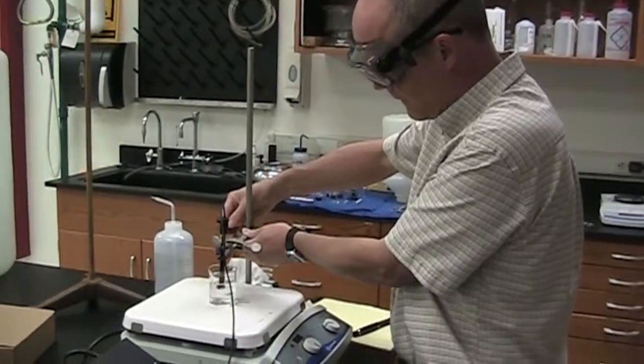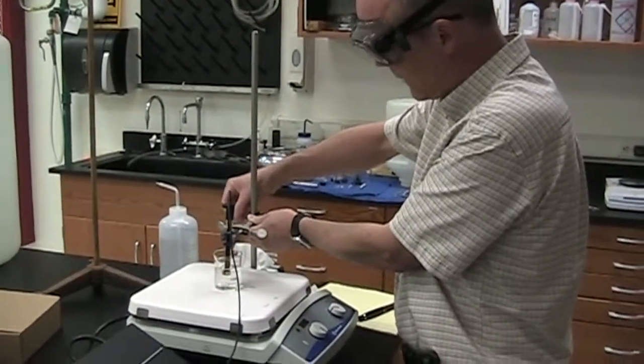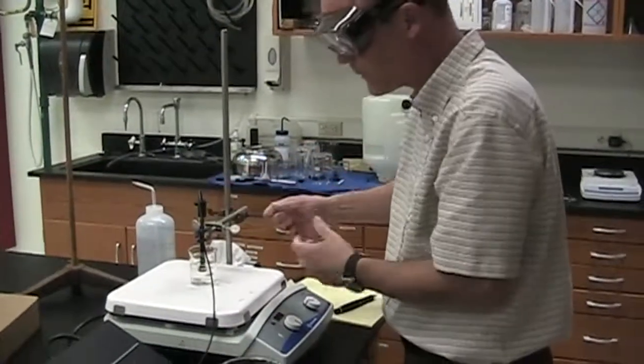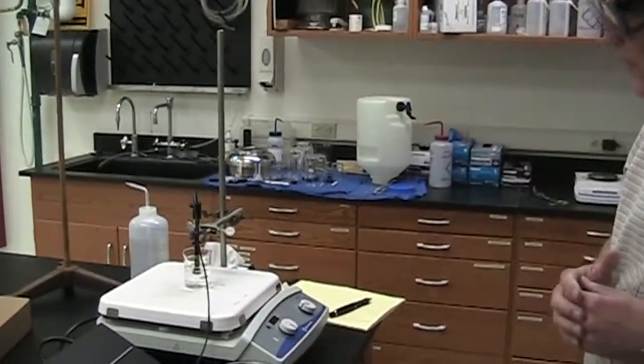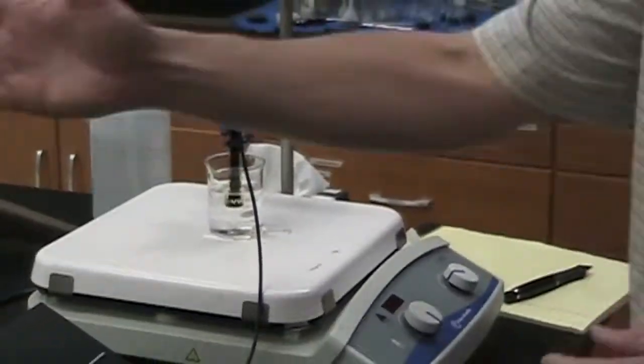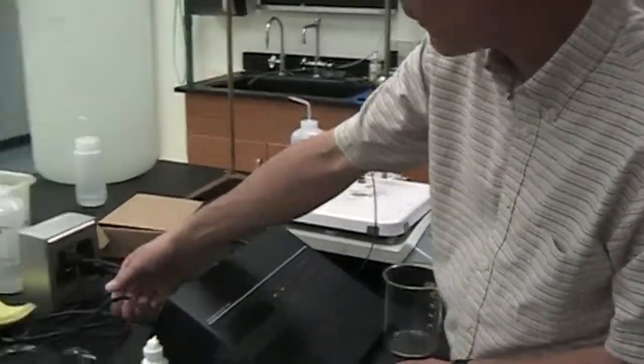Generally speaking, like pH electrodes, we don't want to let this dry out unless we're putting it into long-term storage. So from week to week or lab period to lab period, we'll leave the electrode immersed in an appropriate solution. Final step just to simply shut down the meter. All we're going to do is unplug.